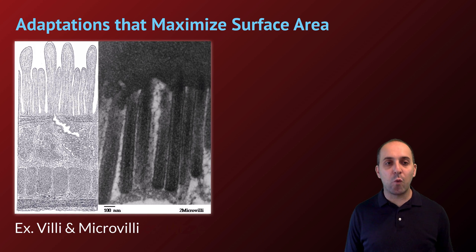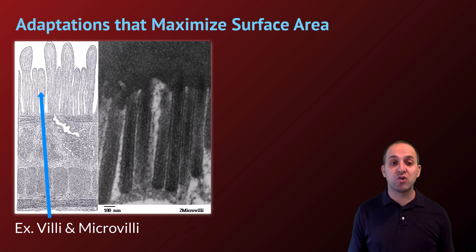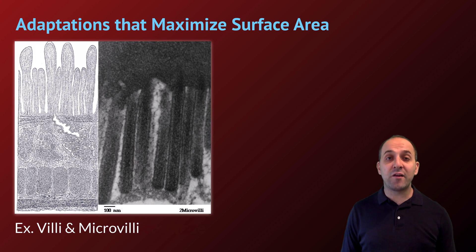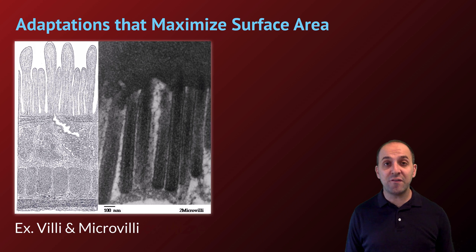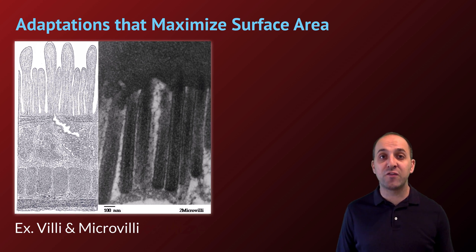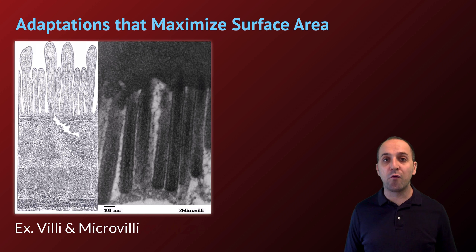Going to the animal kingdom, we can see this at work in our intestines. The internal surface of our intestine is not smooth — it's covered in small finger-like protrusions called villi. The cells on the tips of those villi have similar-looking microscopic protrusions called microvilli. This helps increase the overall surface area of the cells of our intestine, which is incredibly important given that the role of our intestines is to absorb the products of digestion. By increasing the surface area of our intestines, we increase the amount of matter absorbed from our food by several fold. These are just two examples of a much larger phenomenon of surface area adaptations.